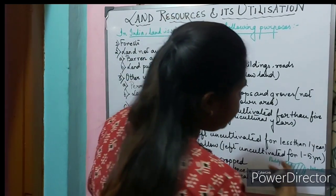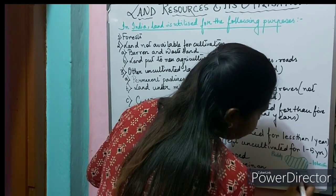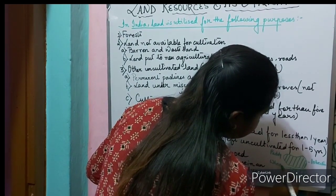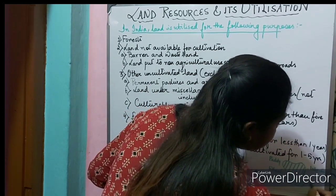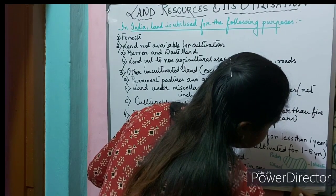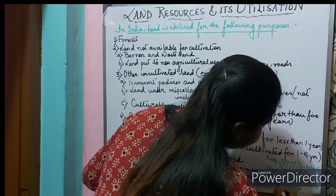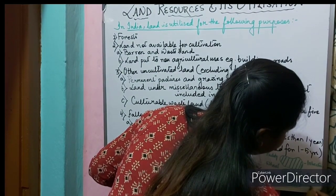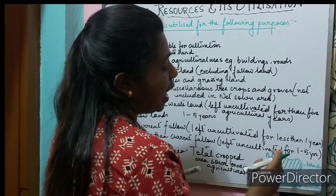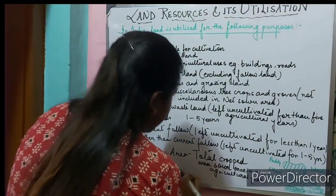Now what is gross cropped area? In the same piece of land, in the same agricultural year, if this land is utilized for cultivation of wheat, that area will become 20 hectares. Again, in the same piece of land in the same agricultural year, if I have done the cultivation for potatoes, the land will become 30 hectares. That means how many times the land has been used to cultivate crops in the same agricultural year - that is referred to as my gross cropped area.